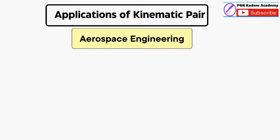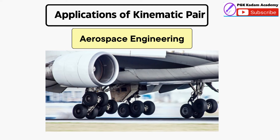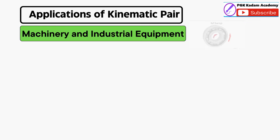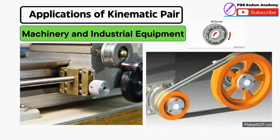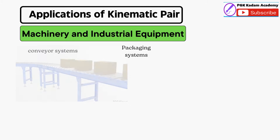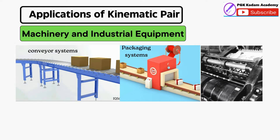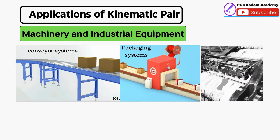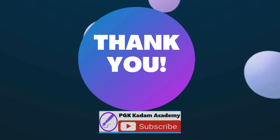In Aerospace Engineering, Kinematic Pairs are utilized in the design of aircraft landing gear systems, control surfaces such as ailerons, elevators, and rudders, and various mechanisms in spacecraft. In Machinery and Industrial Equipment, Kinematic Pairs are used in the design of conveyor systems, packaging machines, printing presses, and milling machines, facilitating the required motion for precise and efficient operation.